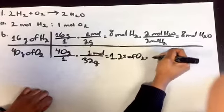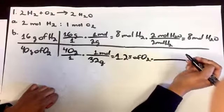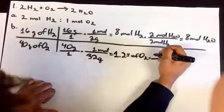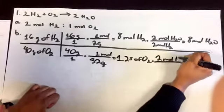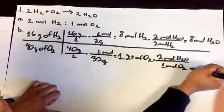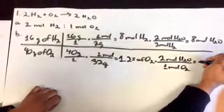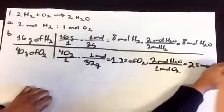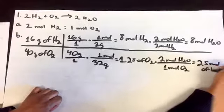And again, you would have to multiply by the molar ratio between O2 and H2O, which is 2 mole H2O over 1 mole O2. You would get 2.5 moles of H2O.